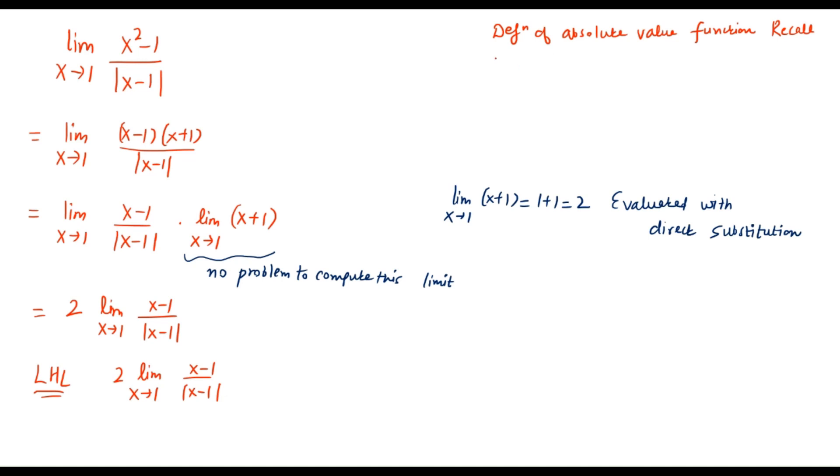Because absolute value function is one function which has different behavior, which is like a piecewise defined function on both sides of 0. So this is the original definition of mod x, but see I don't have mod x in my function, I have mod of (x minus 1). So what will that definition be for x minus 1?